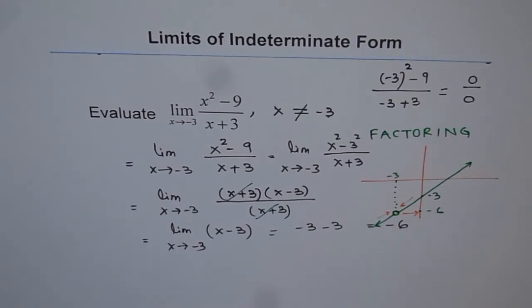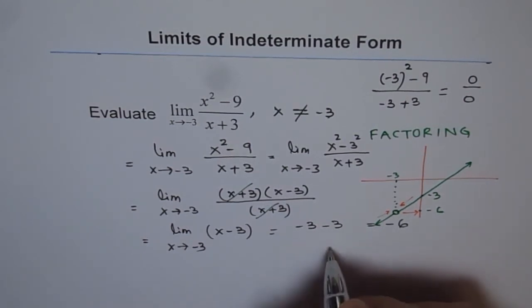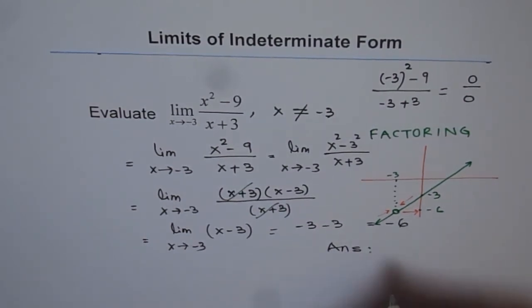So what we learn from here is that the limit of a function may exist at a point where the function does not exist. Limit actually is the value which a function is approaching as we approach that point from the left as well as the right side. For the given case, the limit of the function is minus 6. So we can write the answer. The limit is minus 6. Thank you.